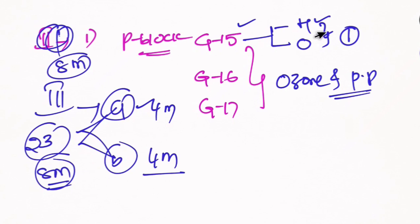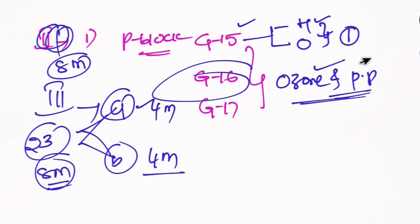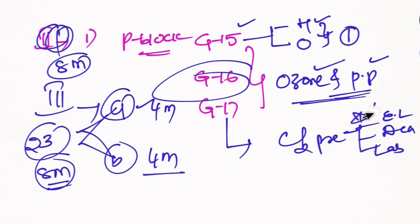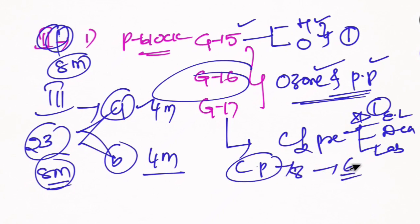After the Haber process, there are four marks. There is one question in Group 15 that is a compulsory printed question. In Group 17, there are three methods of chlorine preparation: electrolytic, Deacon, and laboratory - this is compulsory. In chemical properties, there are 8 marks total. If you do this P-Block, there is a long answer worth 8 marks.